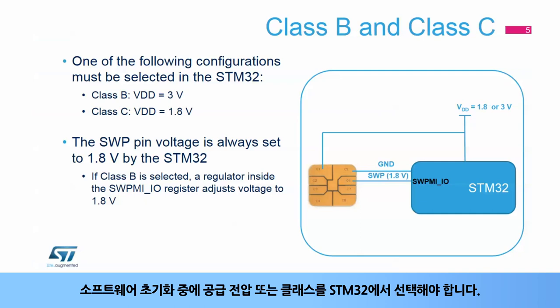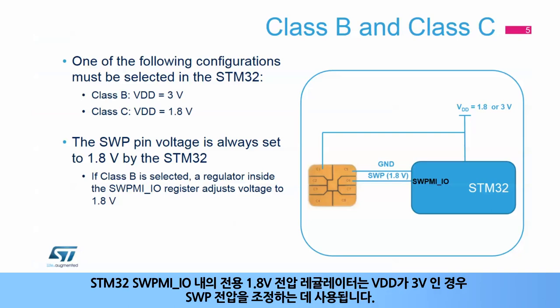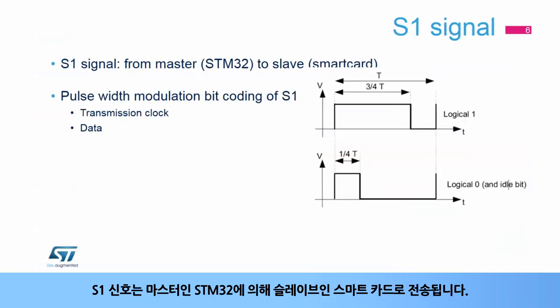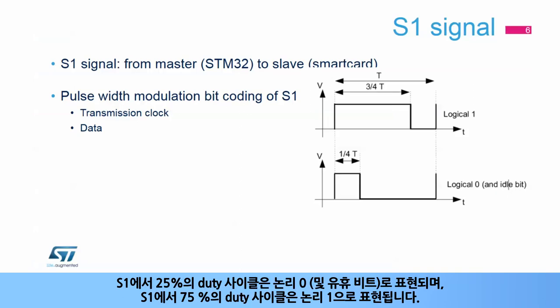The supply voltage class must be selected in the STM32 during software initialization. A dedicated 1.8 volt regulator inside the STM32 SWPMI IO is used to adjust the SWP voltage if VDD is 3 volts. The S1 signal is transmitted by the STM32 (the master) to the smart card (the slave). A duty cycle of 25% on S1 codes a logical 0 and an idle bit, while a duty cycle of 75% on S1 codes a logical 1.